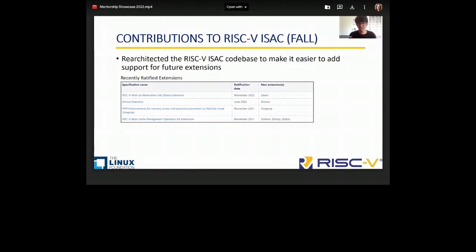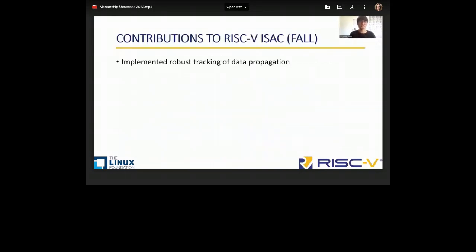We took full advantage of Python's syntactic sugar. We made use of decorators and came up with something like this. Now to add support for any new extension, you have to just define a few functions in the instruction object class and use the appropriate decorator. My second contribution to ISAC involved implementing robust tracking of data propagation. In your architectural tests, you need to hit a condition on the architectural state and store the signature value from the registers.